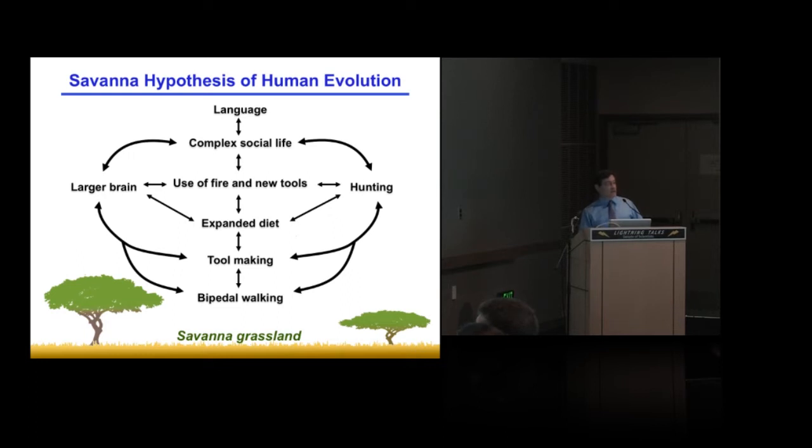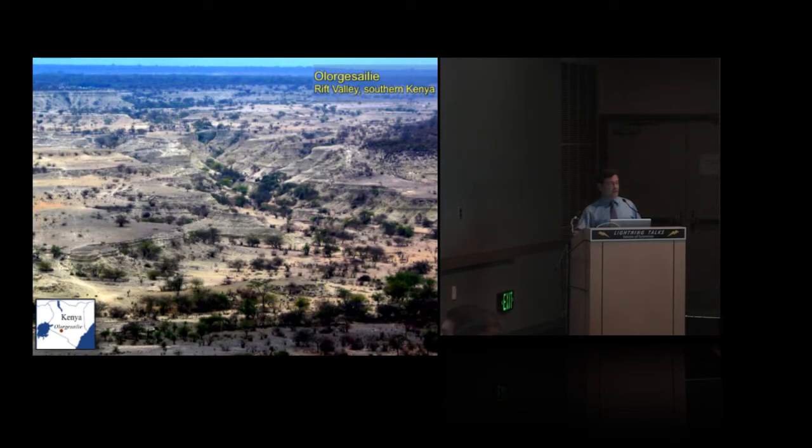My excursion into this topic, the subject of the environmental context of human evolution, began and continues here in the southern Kenya Rift at the site of Olorgesailie. It's an extraordinary archive of environmental change, fossil animals, and the archaeological signals of how human ancestors, from Homo erectus through Homo sapiens, interacted with their surroundings. It's an archive that records the last 1.2 million years.